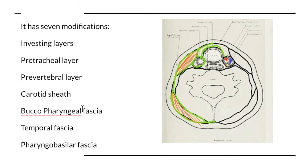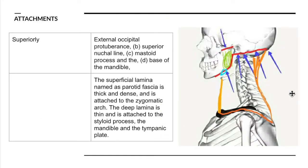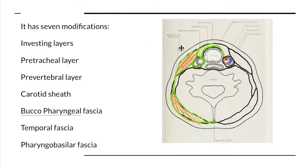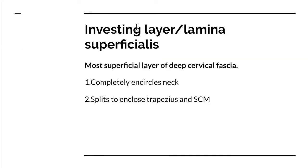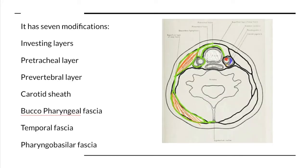This is basically a transverse section of the neck — if I were to cut the person's head and have the anterior end here and the posterior end here, this is what I would see. The investing layer is the most superficial layer of the deep cervical fascia and completely encircles the neck.